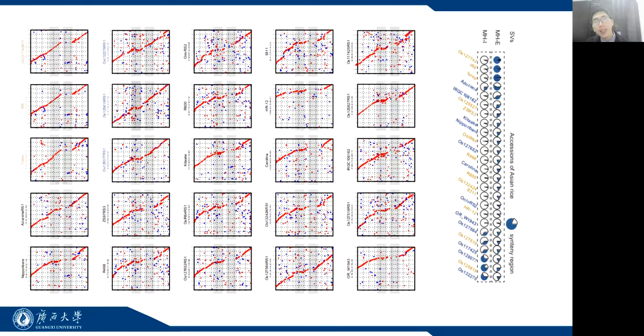We further scanned another 25 high-quality reference genomes for MHE and MHI homologous regions, and unexpectedly, none of them had both complete MHE and MHI. The unique genome signature of Minghui may explain its good resistance to rice diseases.